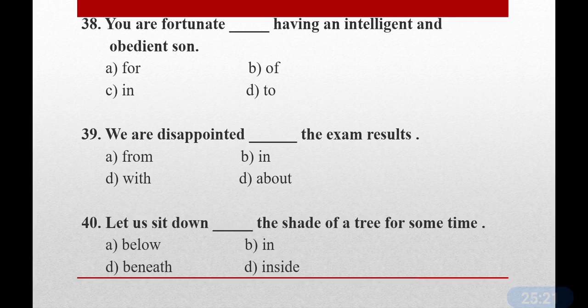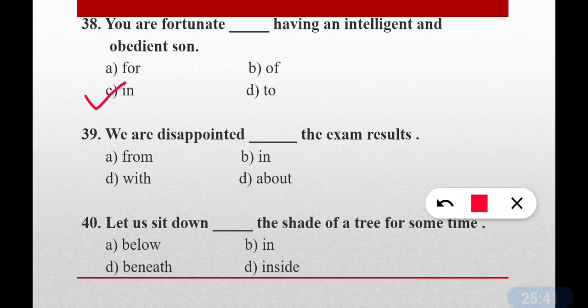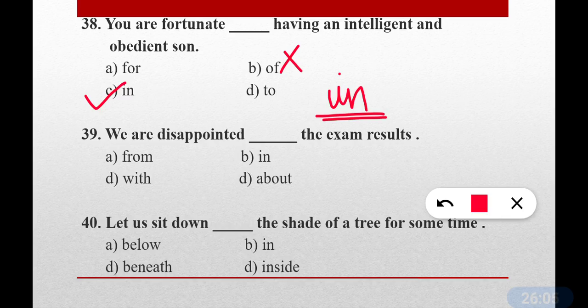Question number thirty-eight: You are fortunate dash having an intelligent and obedient son. The correct preposition is option C — 'in'. We always use 'fortunate in' in most cases. 'You are fortunate off' is wrong. Correct: You are fortunate in having an intelligent and obedient son. Always remember: fortunate + in.